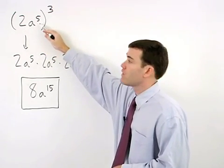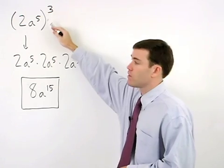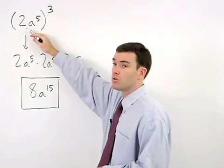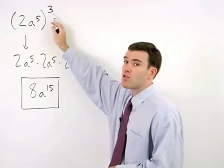Our exponent of 5 is simply multiplied by 3. But our coefficient of 2 is taken to the third power.